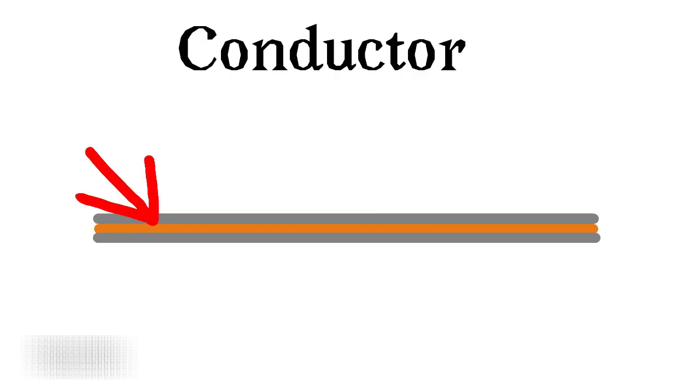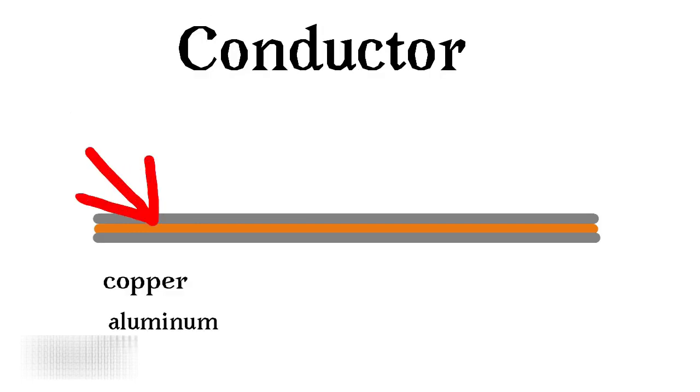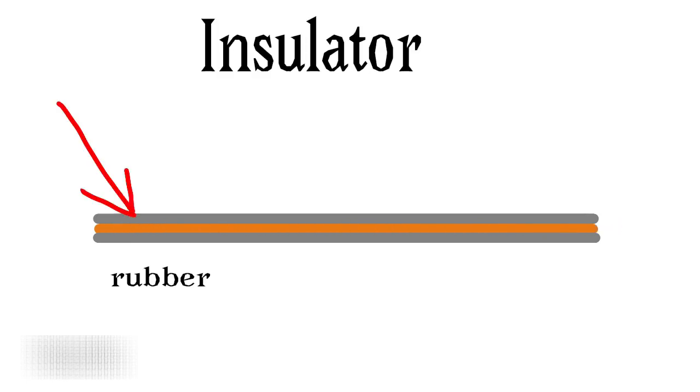Before we get into the putty, we have to understand how it works. So there's two materials: a conductor, that's the material inside the wire, and an insulator, that's the material outside the wire. Some common conductors are copper and aluminum, and a conductor allows electricity to flow through the wire. An insulator would be like rubber or plastic, and they do not let electrons flow through a wire. They stop.